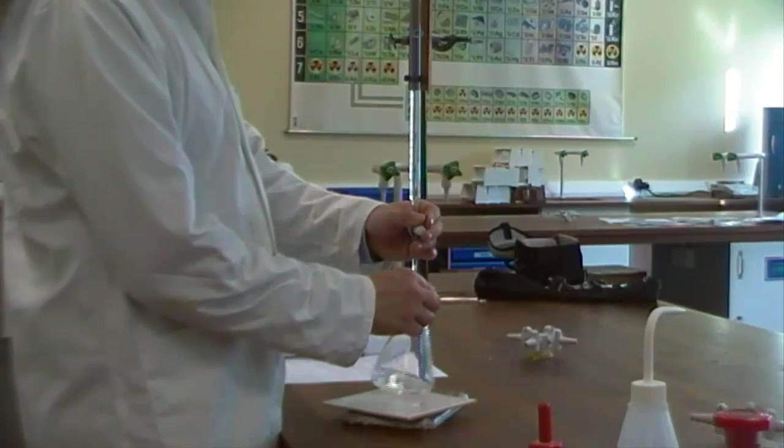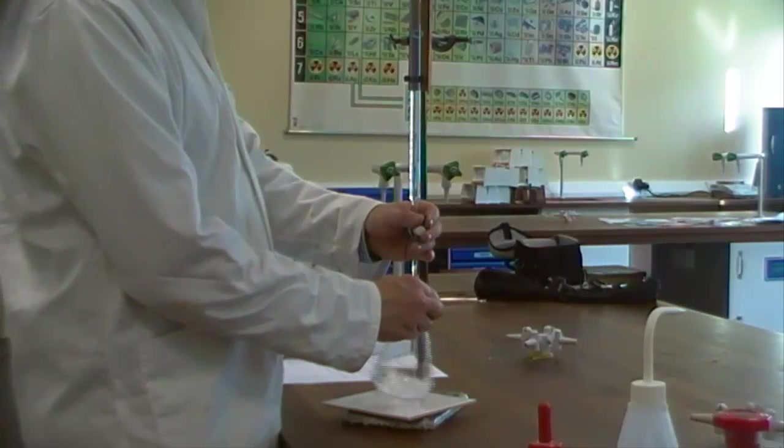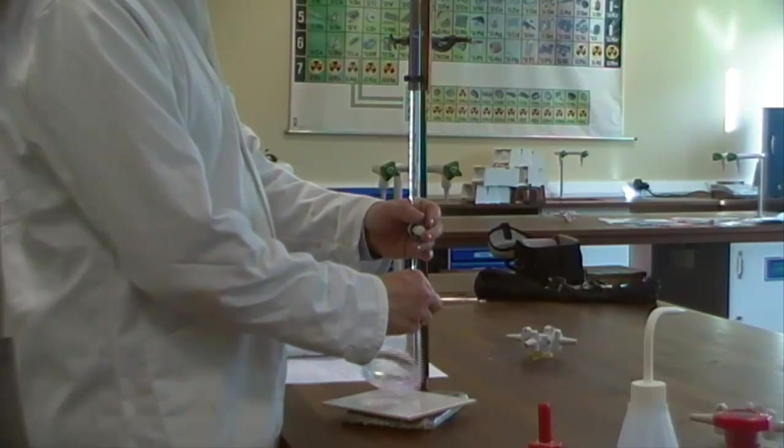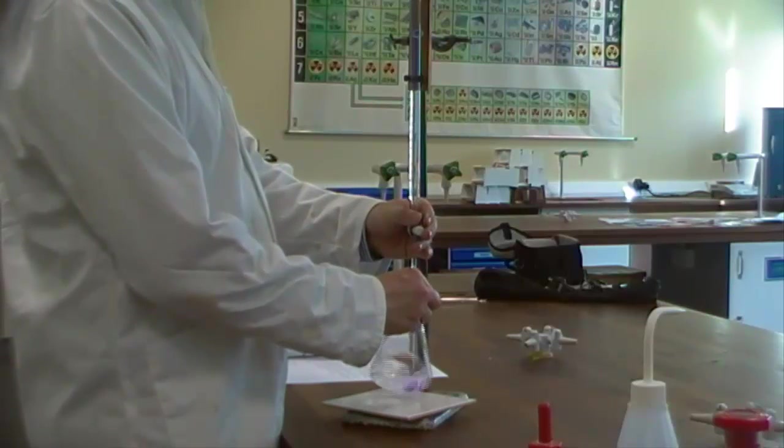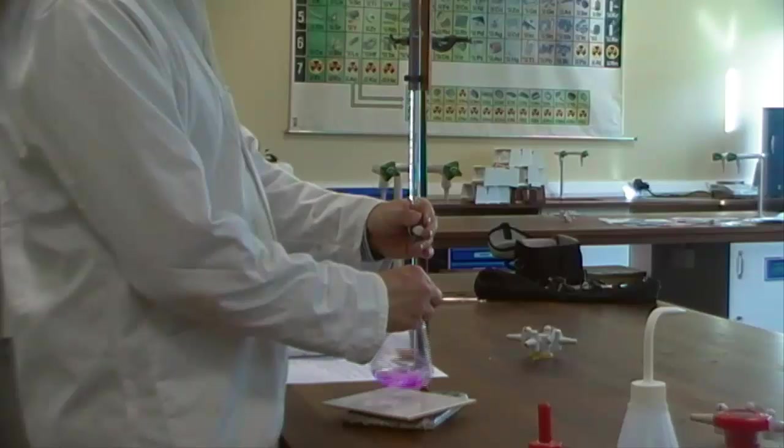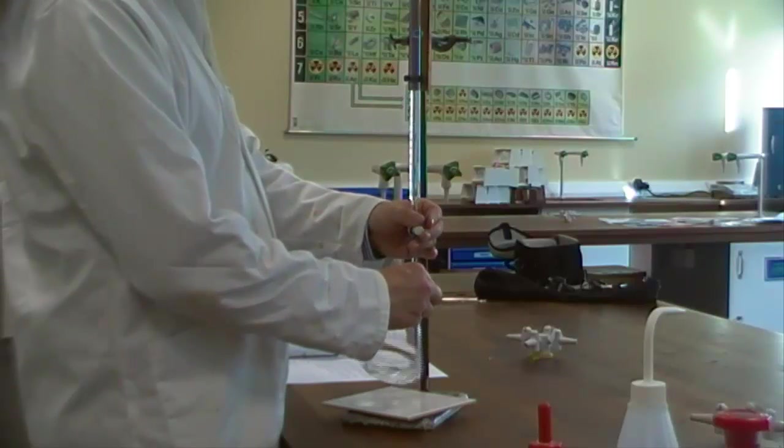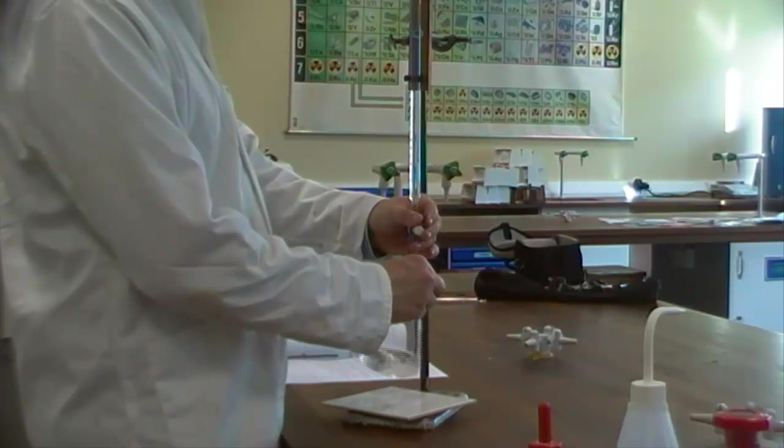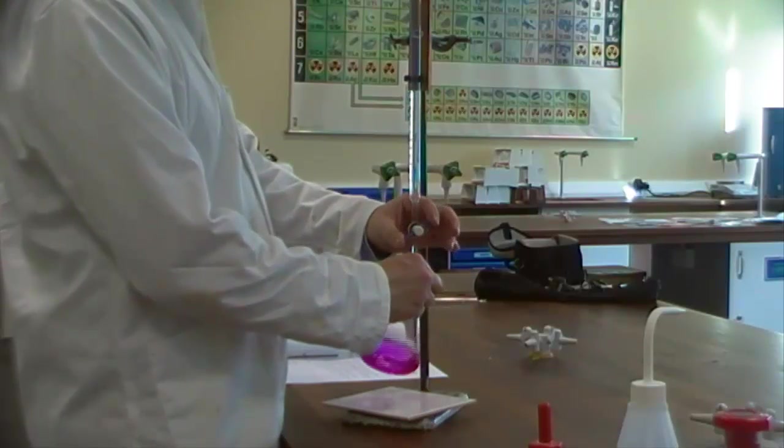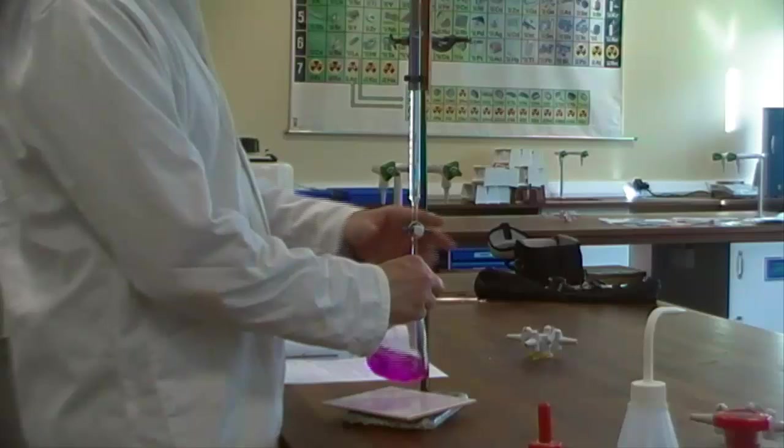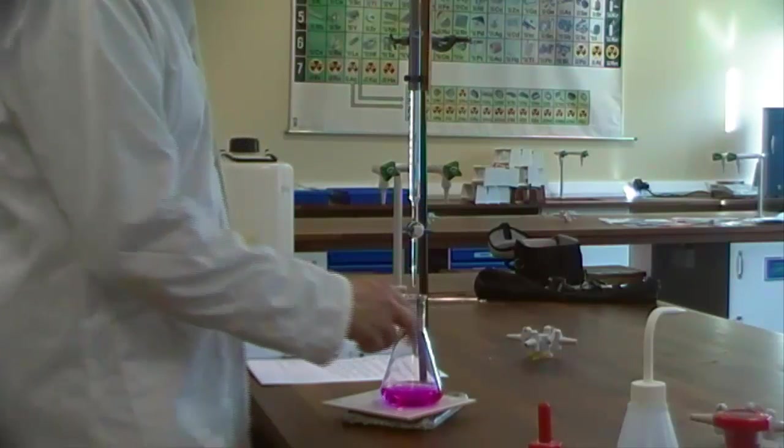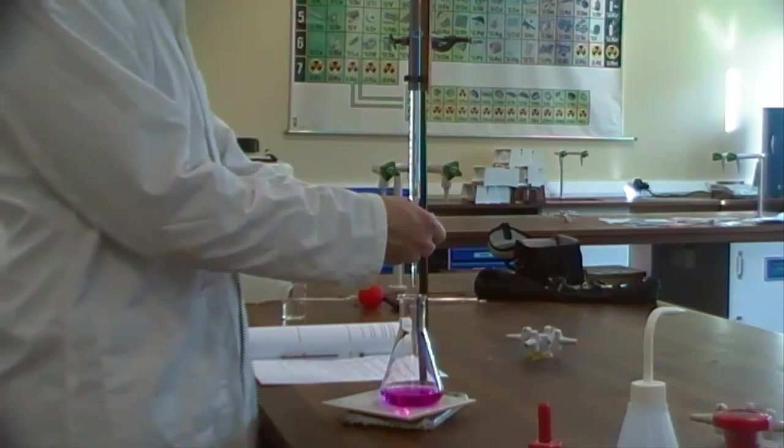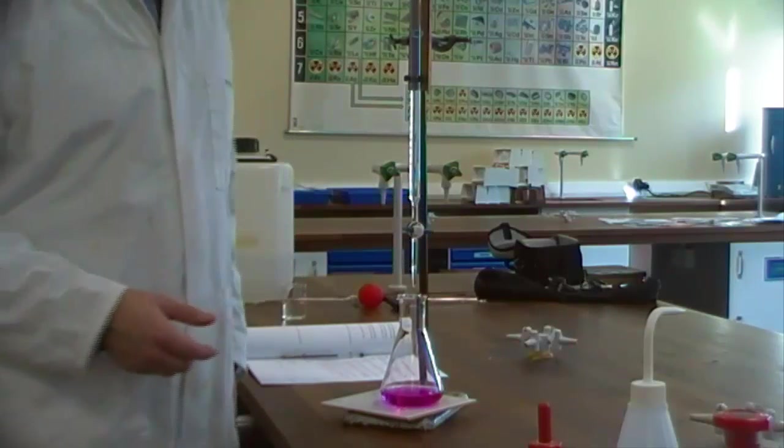I'm going to turn this tap on and then with constant swirling, I'm going to keep watching my conical flask. And I'm watching for this pink colour to stay. As you can see, if you continue swirling, it will go. But now I've run it to a point where the pink colour is staying. This is a rough value that we're taking now, which will guide us in our accurate titrations.